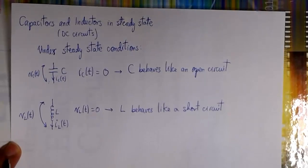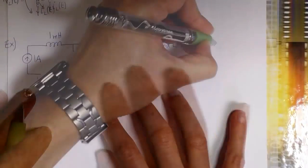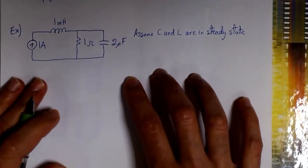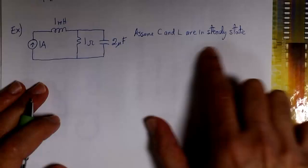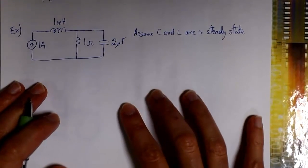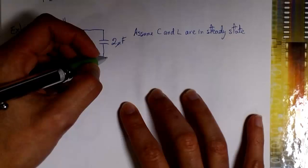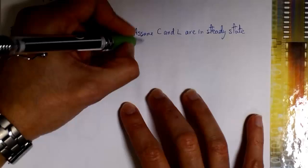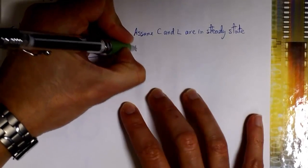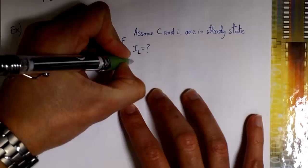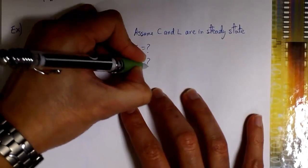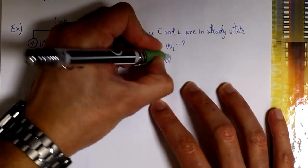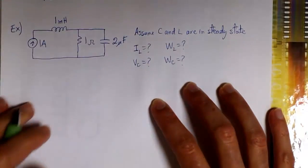Now let's see an example. Let's consider we have a circuit where C and L — the capacitor and inductor — are already in a steady state. We want to find the current flowing through the inductor and the voltage between the terminals of the capacitor. We also want to find the total energy stored in the inductor and the total energy in the capacitor.